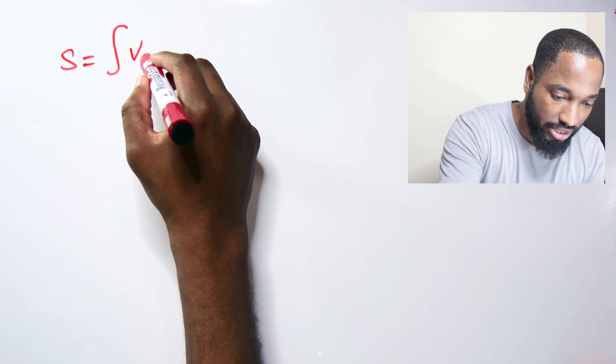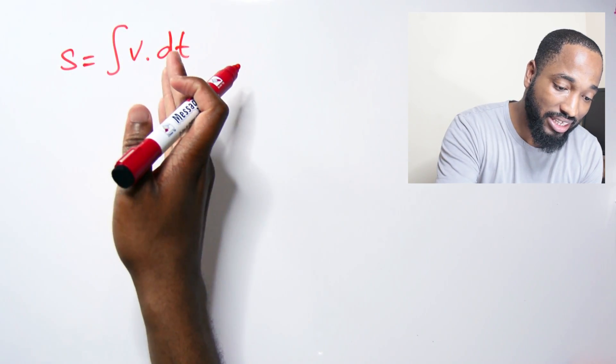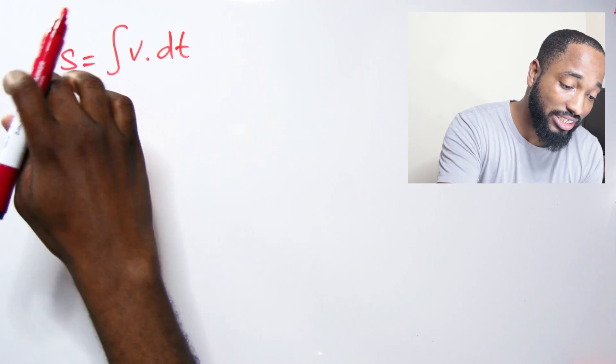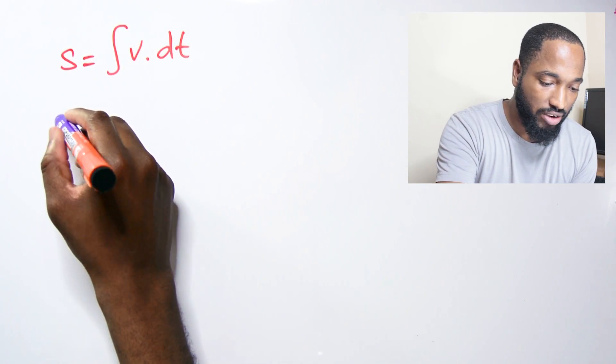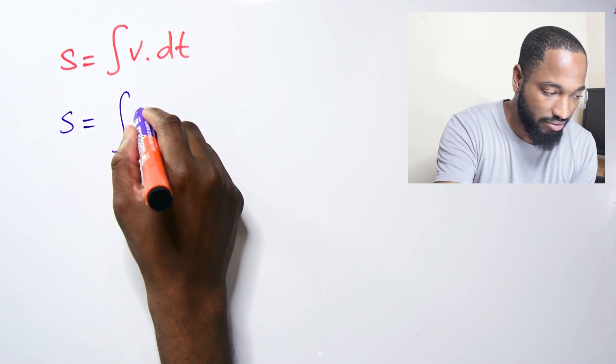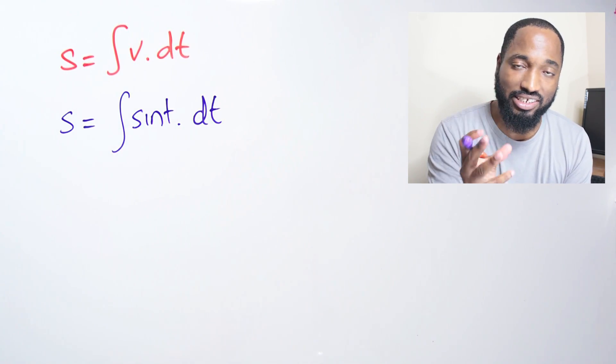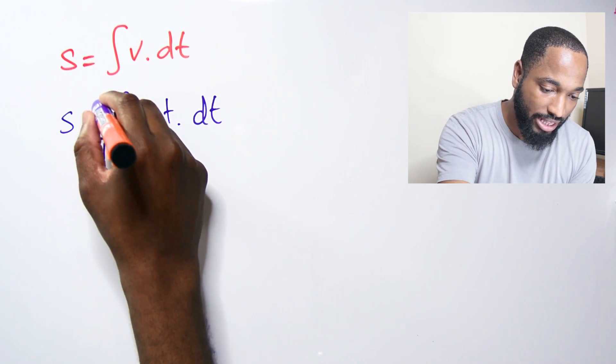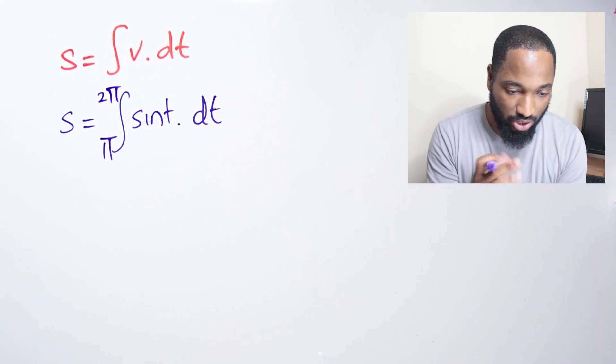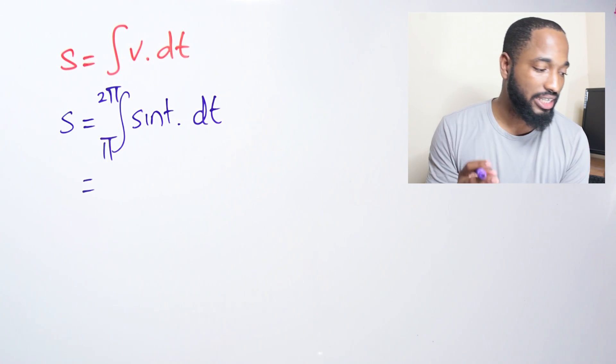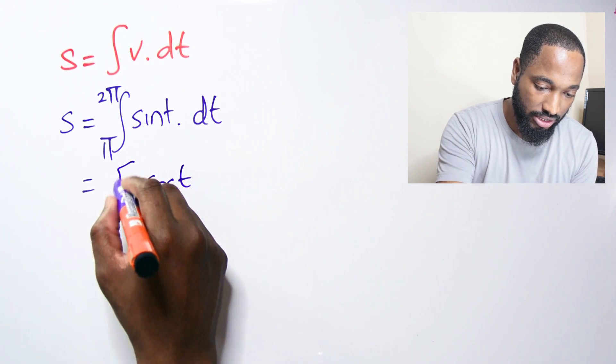We have to integrate acceleration to get velocity, and we have to integrate velocity to get displacement. If we substitute what we got for v - v was sin t - it's the integral of sin t with respect to t. The catch is understanding that this is a definite integral, so we put π here and 2π here as the lower and upper limits.